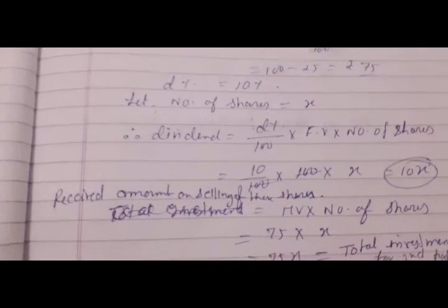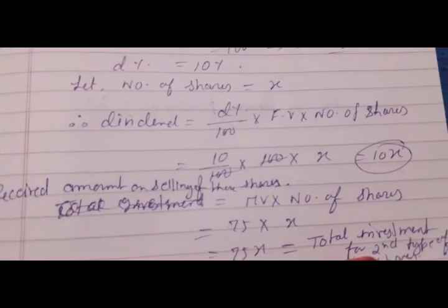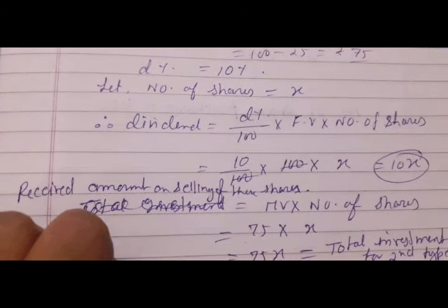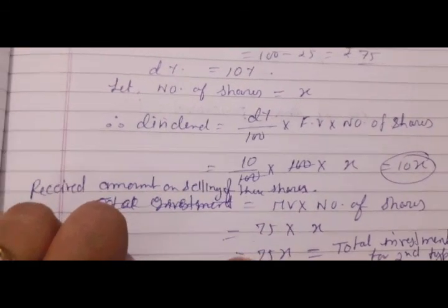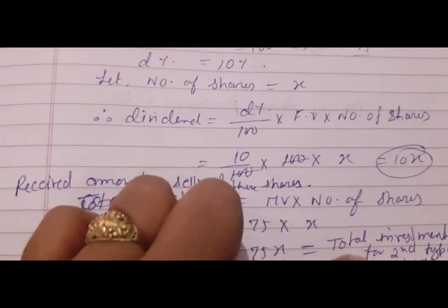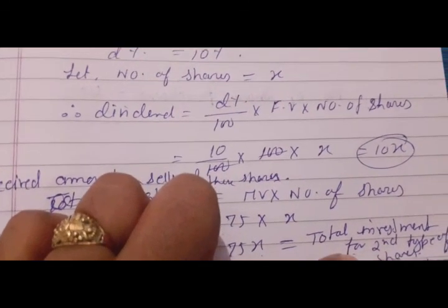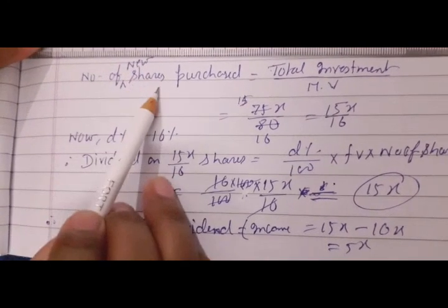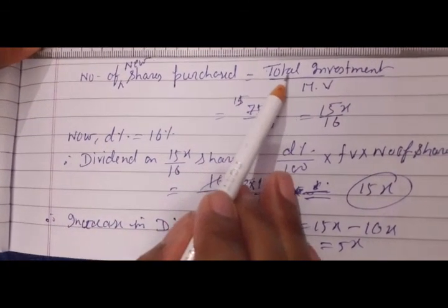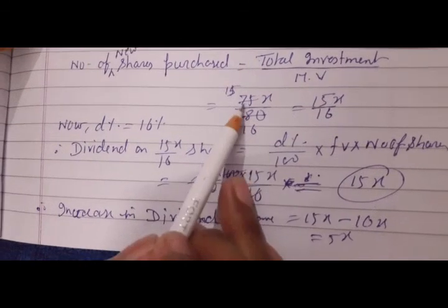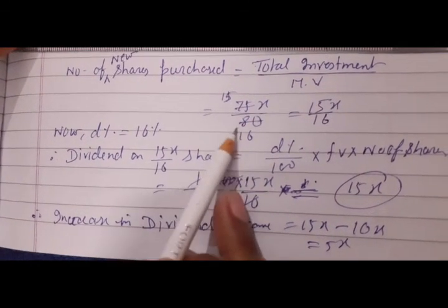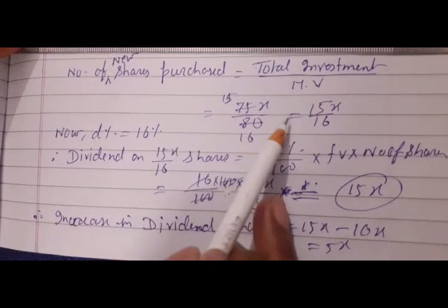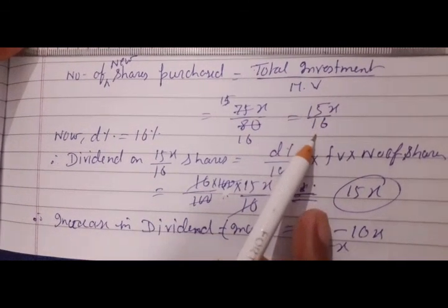This amount 75x is the total investment for the second type of shares, since he invested all his proceeds. Number of new shares purchased equals total investment divided by market value, which is 75x divided by 80. Simplifying 75x upon 80 gives us 15x by 16 shares — that is the number of new shares purchased.